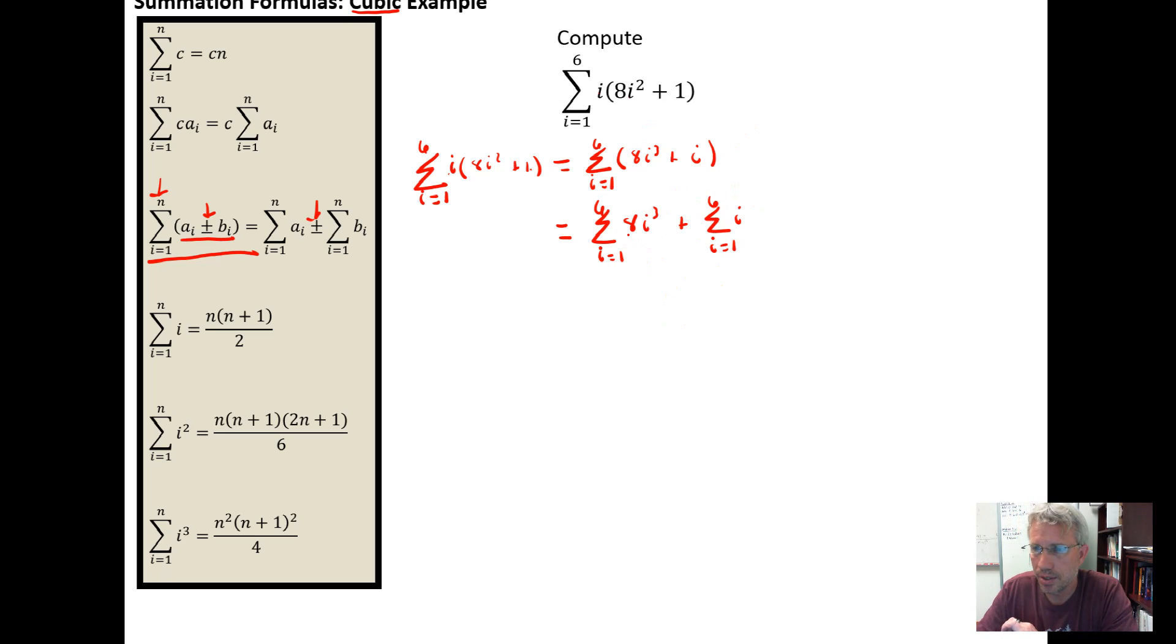I want to look at this and recognize I have a constant times an index term. If I have a constant times an index term, the constant can be factored out in front of the summation. So I'm going to factor the 8 out to get 8 times the sum from i equal 1 to 6 of i³ plus the sum from i equal 1 to 6 of i.